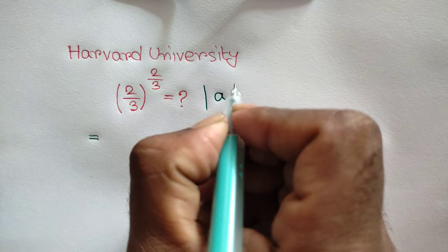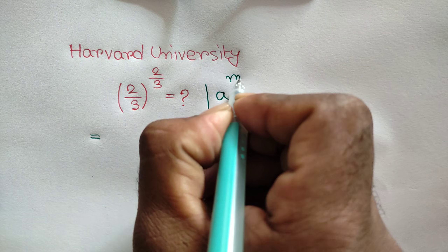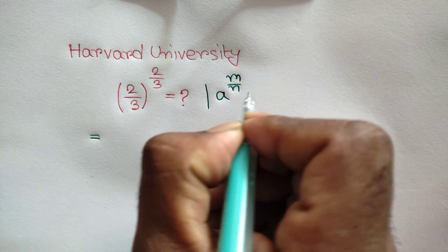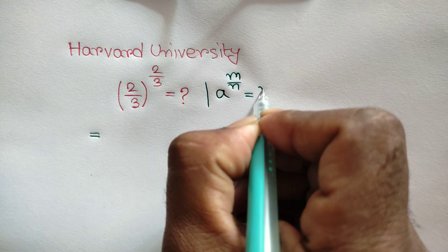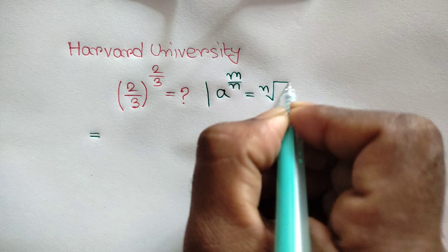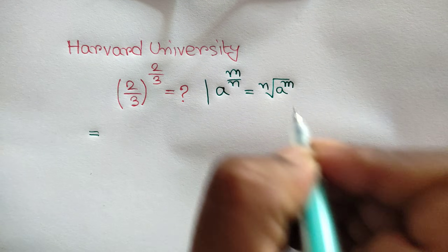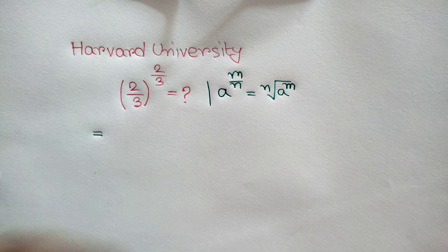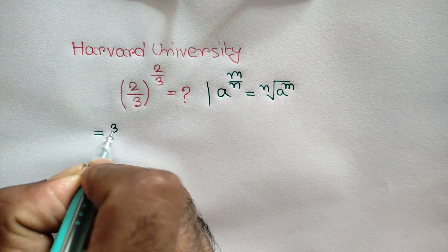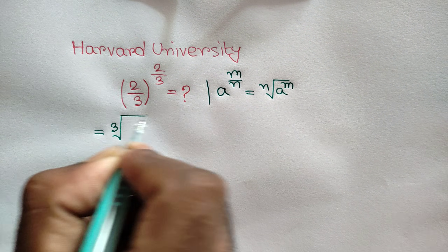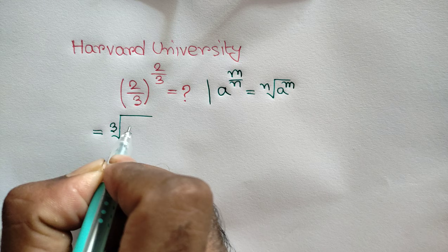We know that a to the power m/n is equal to the nth root of a to the power m. So we can write here: cube root of (2/3) whole squared.